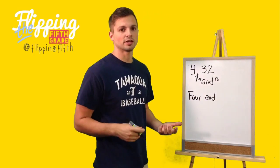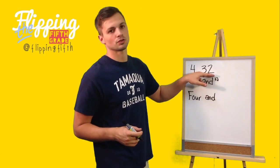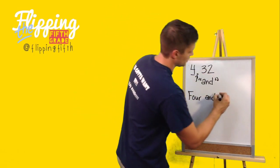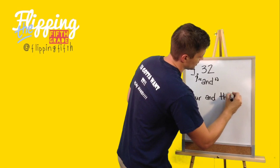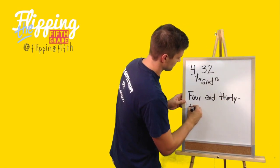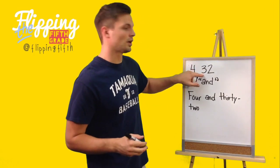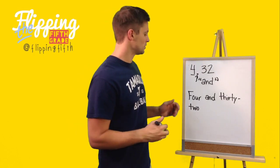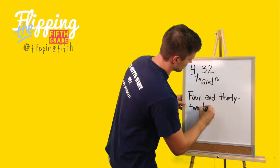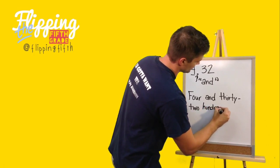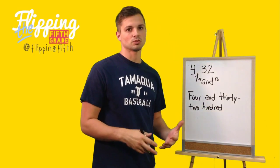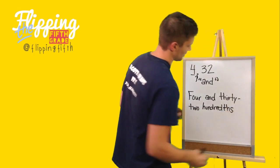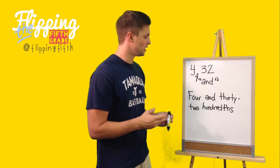Since this number is greater than twenty and less than ninety-nine, and it doesn't end in a zero, we are going to need a hyphen. So we write 'four and thirty-two.' Now we count the digits after the decimal: one, two. What number has two zeros in it? Hundred. So we write 'four and thirty-two hundredths.'